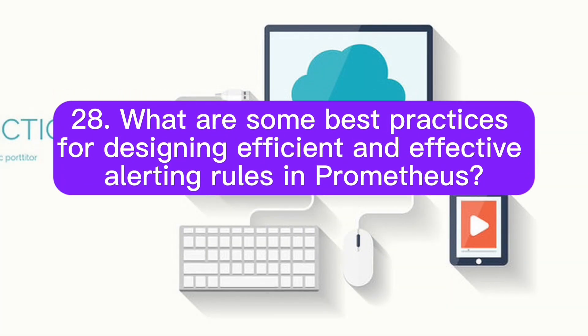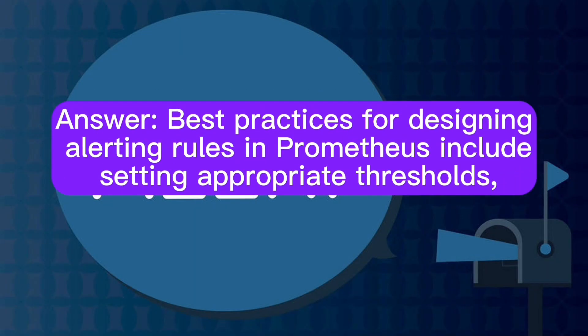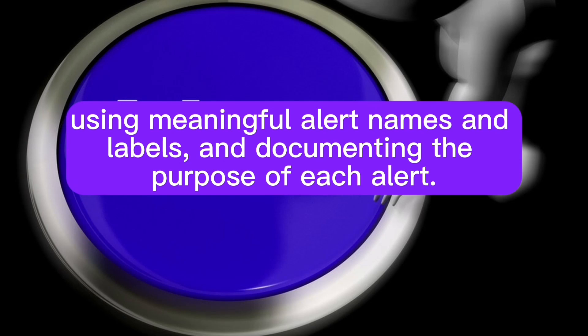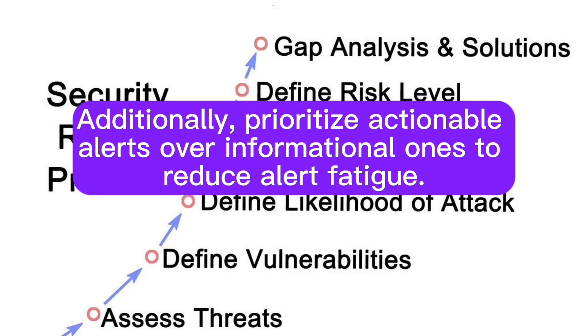What are some best practices for designing efficient and effective alerting rules in Prometheus? Best practices include setting appropriate thresholds, using meaningful alert names and labels, and documenting the purpose of each alert. Additionally, prioritize actionable alerts over informational ones to reduce alert fatigue.